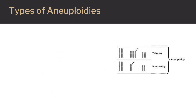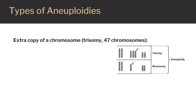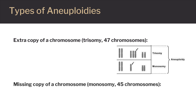There are two main types of aneuploidies. There can be an extra copy of a chromosome — trisomy — or a missing copy of a chromosome — monosomy. Trisomy occurs when a person has an extra copy of a chromosome, giving them 47 chromosomes in total. Common conditions that are a result of trisomy include Down syndrome, also known as trisomy 21, which is characterized by an additional copy of chromosome 21.